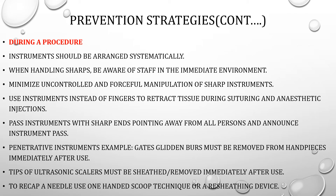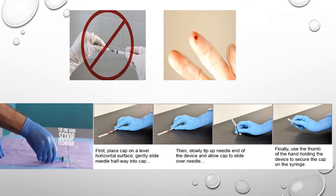The scoop technique is a technique using one hand. For the one-hand scoop technique — you can see the picture — first the cap is placed on the table. Don't touch it with the other hand. Place the needle halfway into the cap, then slowly tip the needle end of the device and take it. Then finally use the thumb of the hand holding the device to secure the cap. That means you are always using one hand with the needle.